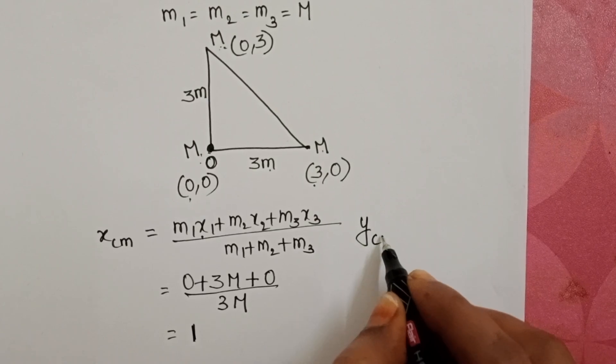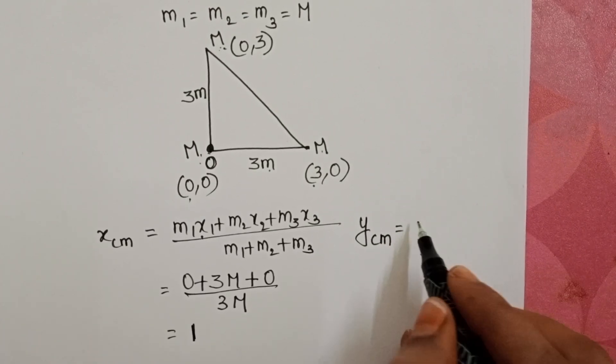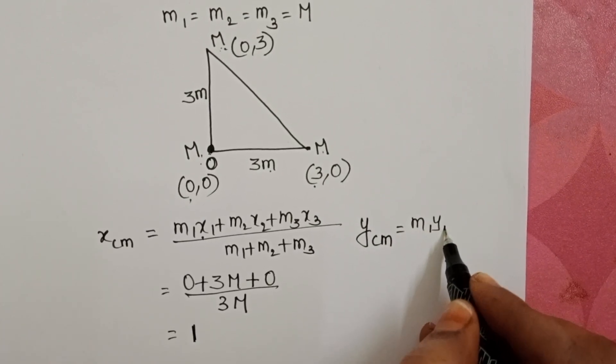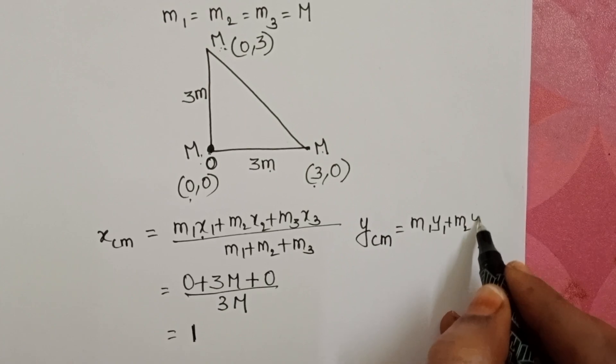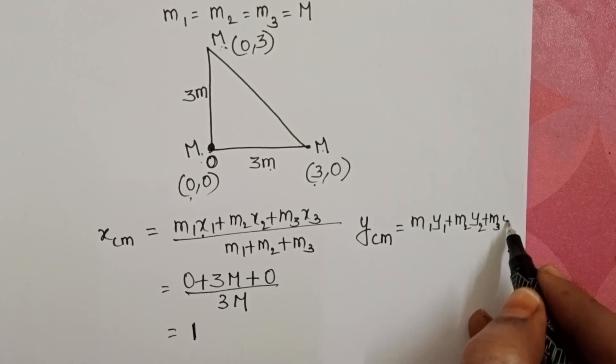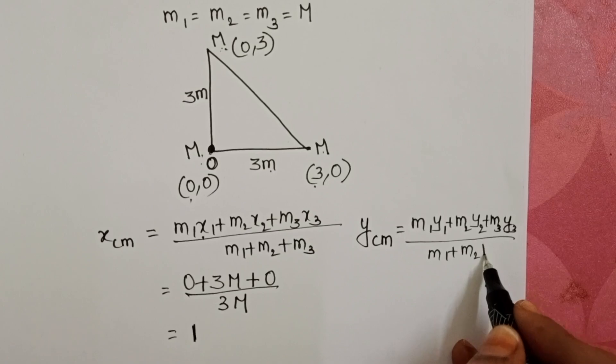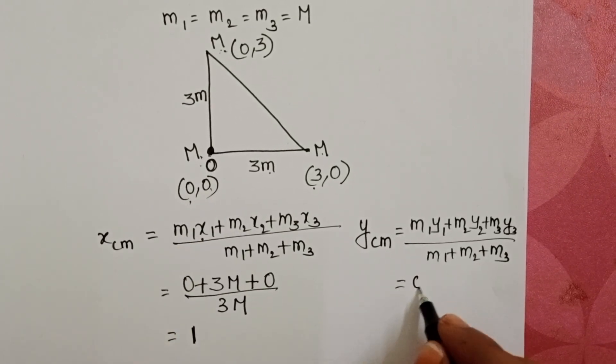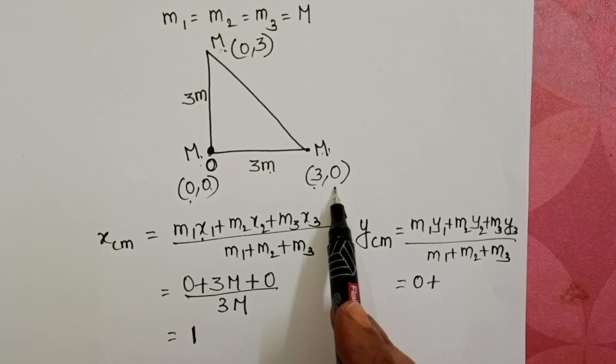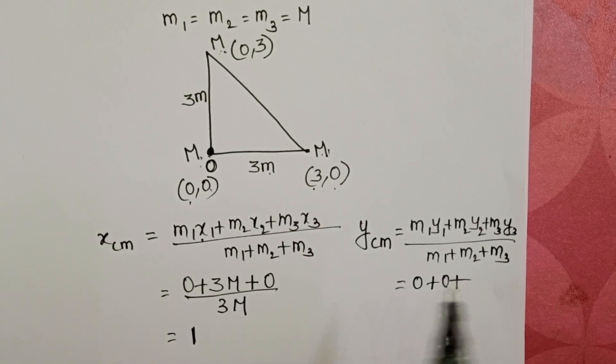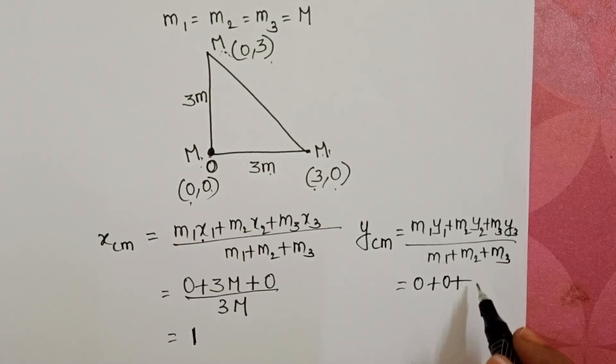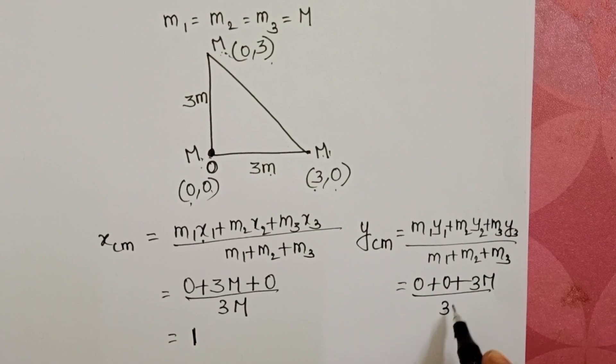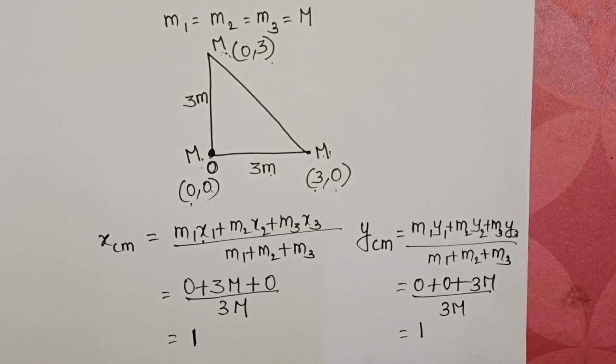Center of mass of the system along the y direction: M1 y1 plus M2 y2 plus M3 y3 by total mass. M into 0, M into 0, this one also 0, and M into 3 is 3M. Total mass is 3M. That equals 1.